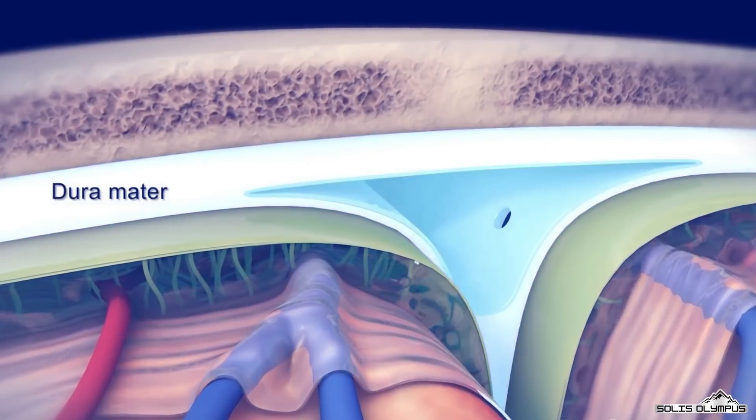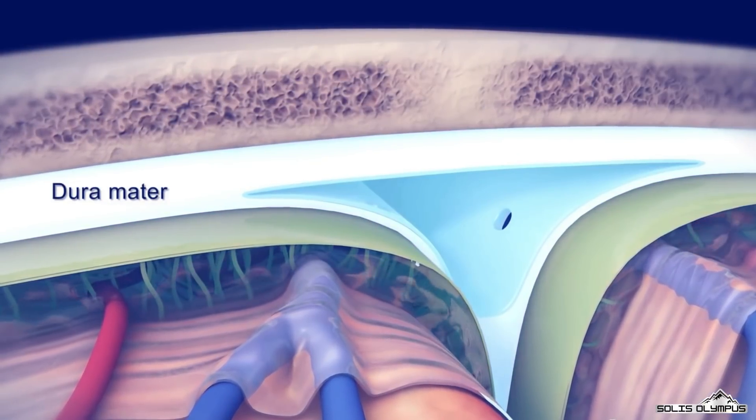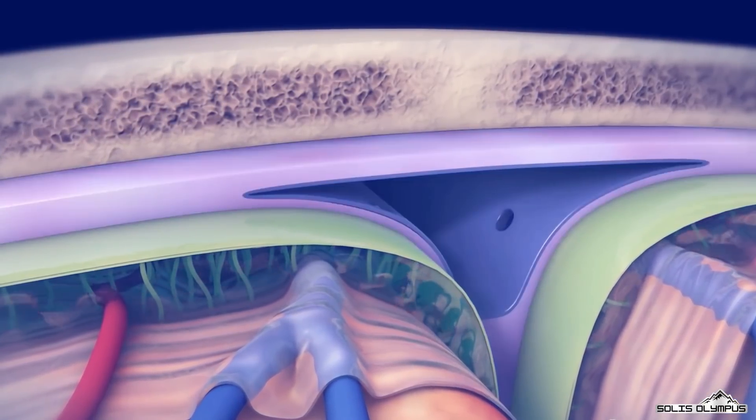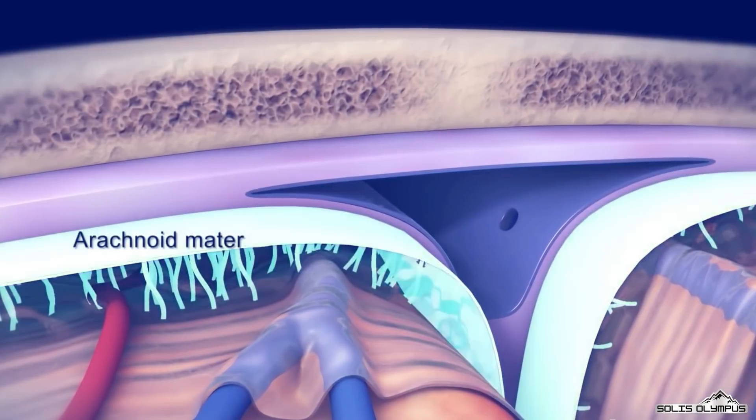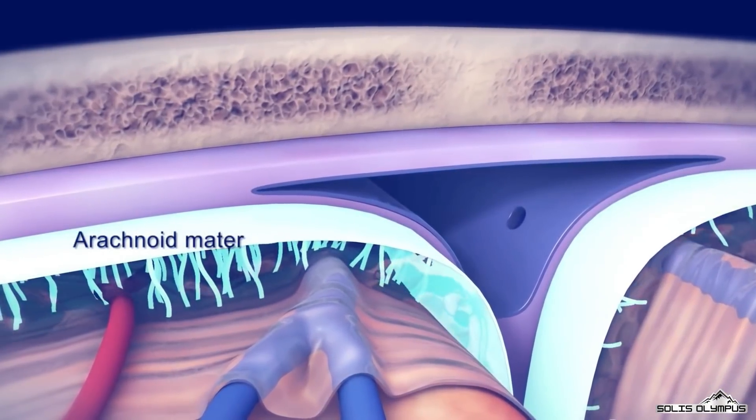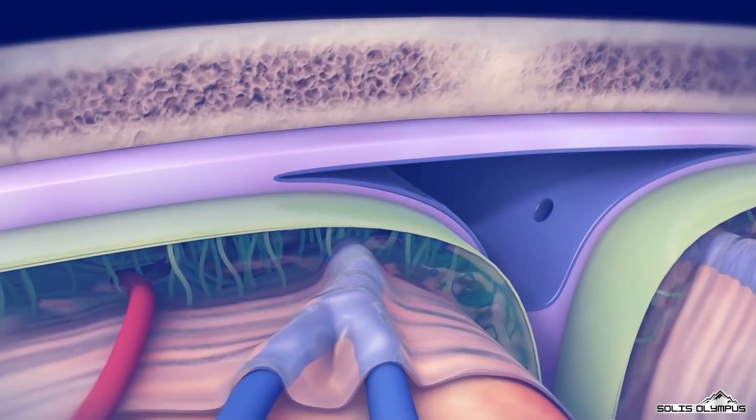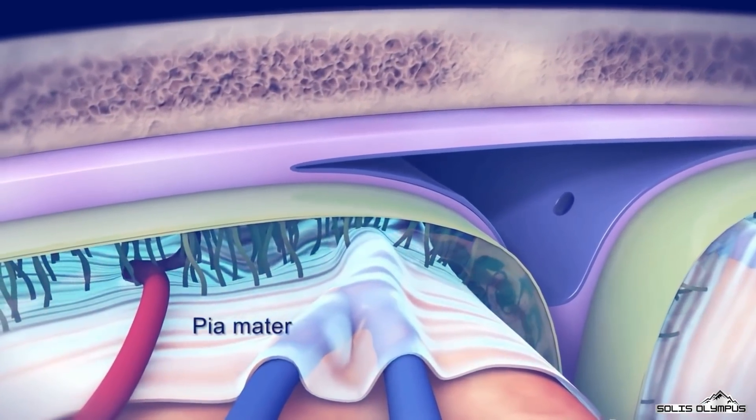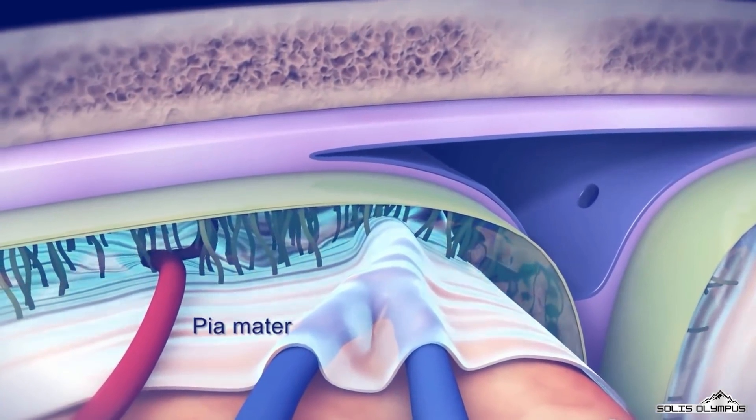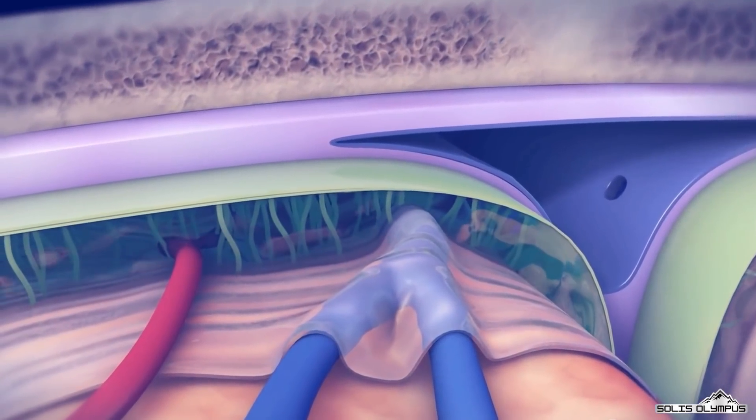The outermost layer, called the dura mater, is a thick and tough layer composed of dense fibrous tissue. The middle layer, called the arachnoid mater, is a thin and transparent layer composed of fibrous tissue. And the innermost layer is called pia mater, which is a thin and vascular layer that hugs the surface of the brain.